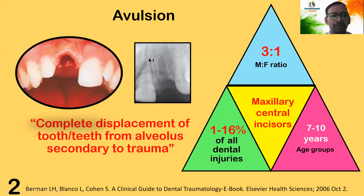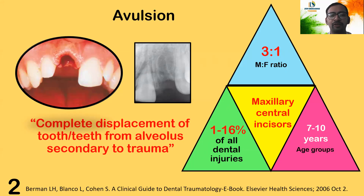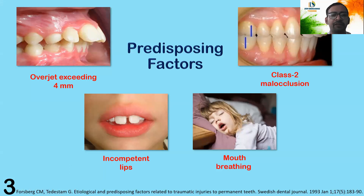Avulsion, as you all know, is the complete or partial displacement of a tooth from the alveolus. As you can see in the figure, there is a complete displacement of the tooth out of the socket. It is more commonly seen in males compared to females at a 3:1 ratio, and the frequency is around 1 to 16 percent of all dental injuries. The maxillary central incisor is the most commonly affected tooth, and the age group of 7 to 10 years is most commonly affected. Predisposing factors include overjet exceeding 4mm, Class II malocclusion, incompetent lips, and mouth breathing habits.